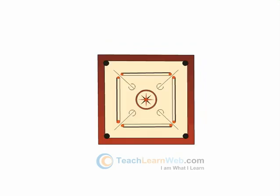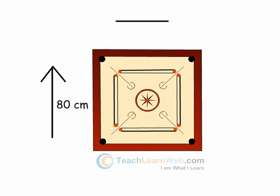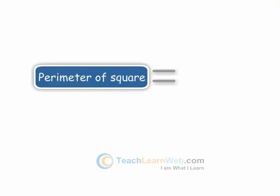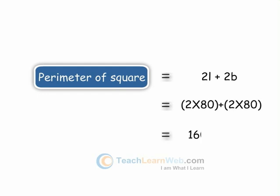See our caromboard children. It is square in shape whose length of one side is 80 cm. Shall we calculate its perimeter children? Perimeter of square is equal to 2L plus 2B which equals to 2 into 80 plus 2 into 80. 160 plus 160 is equal to 320 cm.